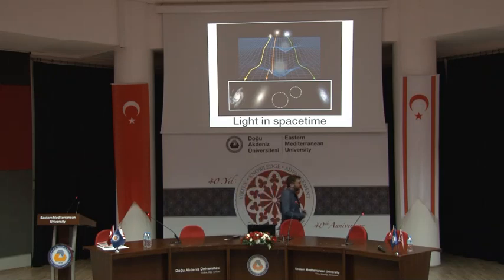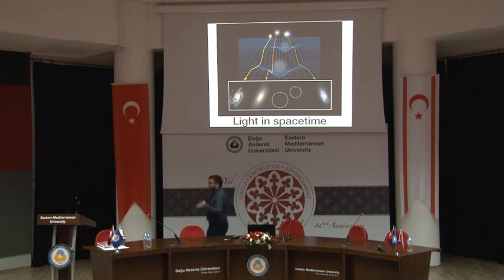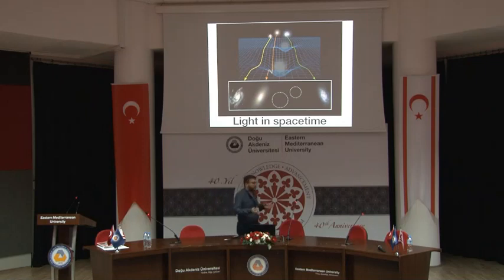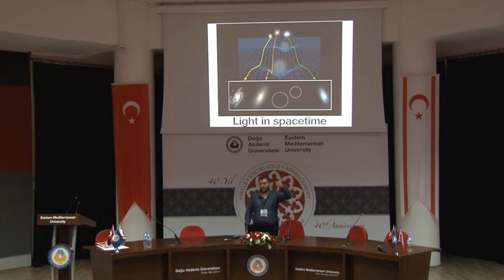This is a very interesting thing. As you can see in the figure, locally light always travels in a straight line. But when you look at it globally, light appears deflected. Because of that, we can see objects behind massive things — for example, behind galaxies or behind a black hole — using this light deflection.